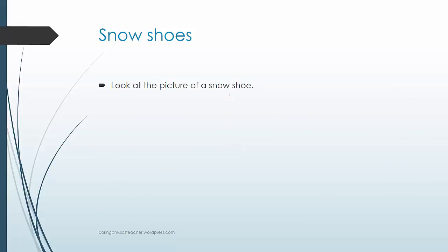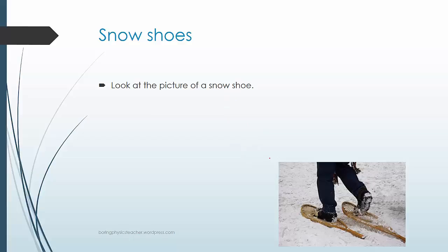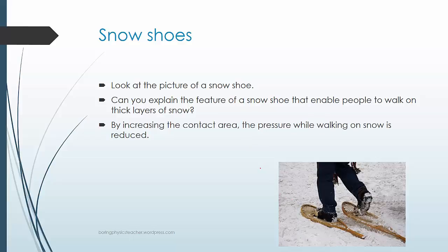Look at the picture of a snowshoe. We find that, can you explain the feature of a snowshoe that enables people to walk on thick layers of snow? We find that it is the opposite of heels. By increasing the contact area, the pressure while walking on the snow is actually reduced.